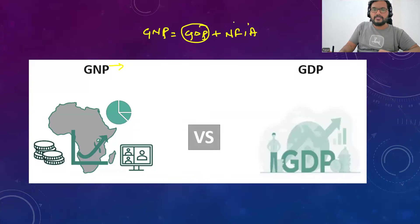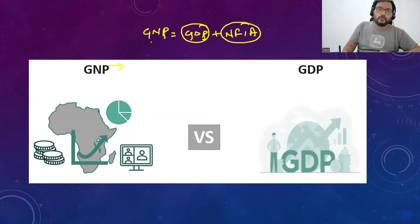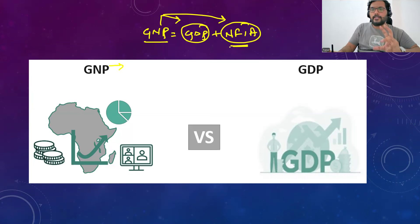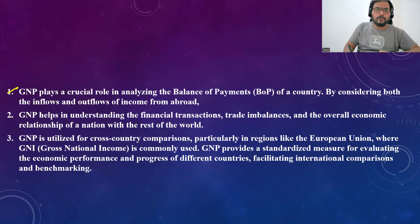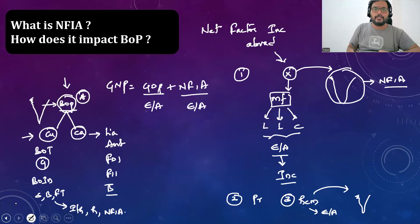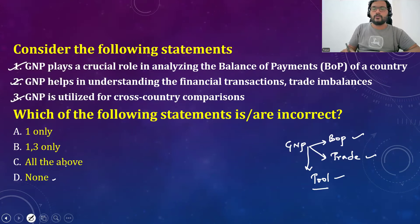GDP represents domestic economic activity, and NFIA represents economic activity outside your territory — together they make GNP. GNP's role depends directly on GDP, and NFIA makes a very significant impact on GNP. Go through this explanation, and if you have any doubts you can comment or share those questions with me. Thank you.